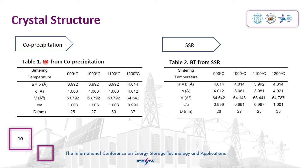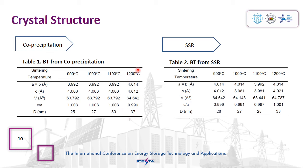This can be represented in Table 1 from co-precipitation and Table 2 from solid state reaction. We can see that the lattice parameter, volume cell, and tetragonality of BT from co-precipitation are different from BT from solid state reaction. However, the crystallite size values are relatively close, in which the crystallite size increases with increasing sintering temperature, and the largest crystallite size was obtained at the temperature of 1200 degrees Celsius.